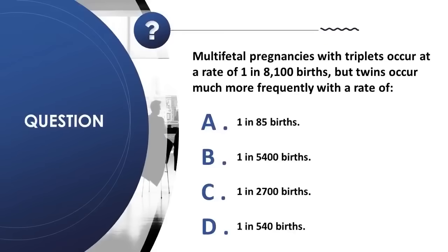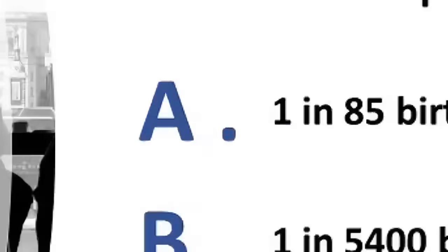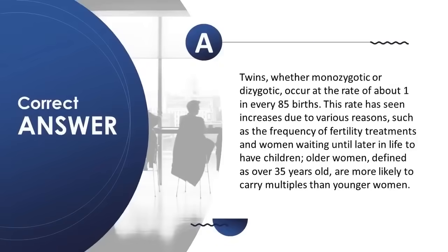Question 10: Multifetal pregnancies with triplets occur at 1 in 8100 births; twins occur at a rate of: A) 1 in 85 births, B) 1 in 5400 births, C) 1 in 2700 births, D) 1 in 540 births. Correct answer is A. Twins occur at about 1 in every 85 births. This rate has increased due to fertility treatments and women waiting until later in life. Women over 35 are more likely to carry multiples than younger women.